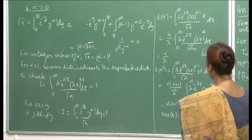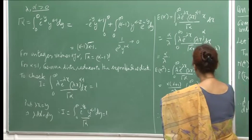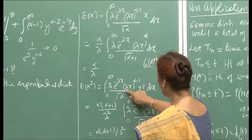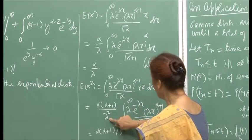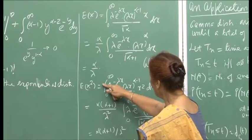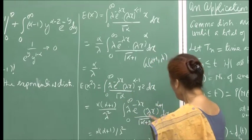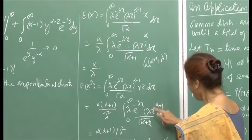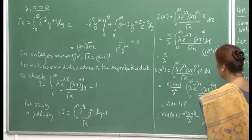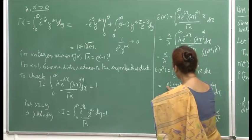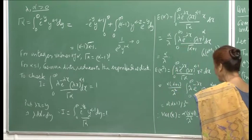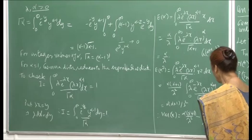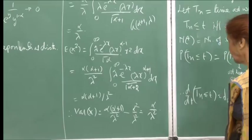For E[x squared], similar manipulation yields alpha(alpha+1) upon lambda squared. Therefore, the variance equals alpha(alpha+1)/lambda squared minus (alpha/lambda) squared, which simplifies to alpha upon lambda squared.